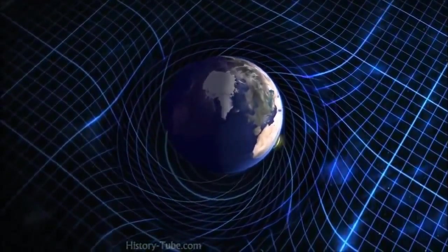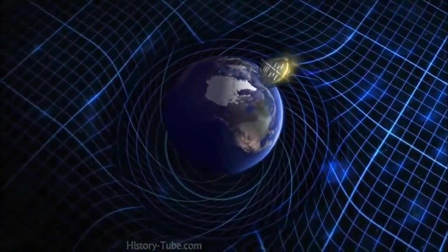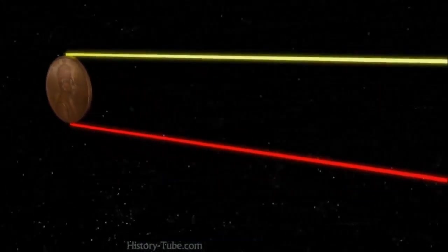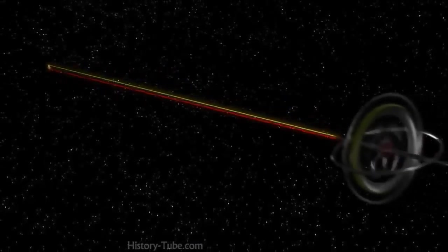Einstein's theories predict that the Earth's rotation twists space by only a tiny amount. An amount so small, it would be like trying to measure the height of a penny from 62 miles away.